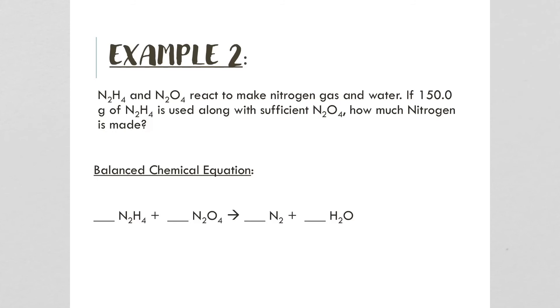In these examples, you'll sometimes see sufficient N2O4 or excess N2O4. That's a lesson that will come in the future about the limiting reactant. Sometimes you can't have equal balance because of errors in your measurements.